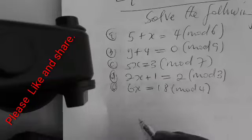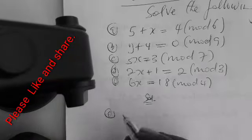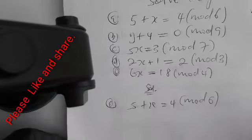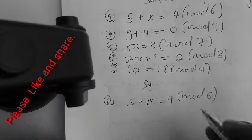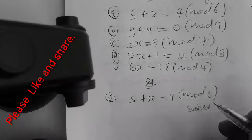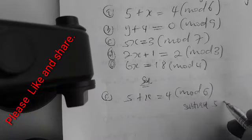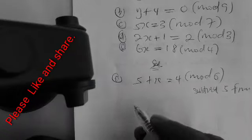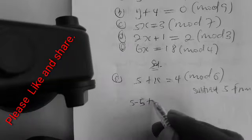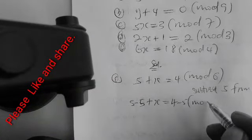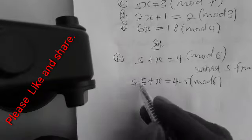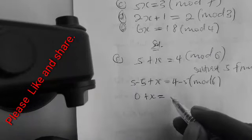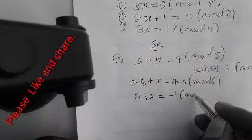So how do we solve this? To solve 5 plus x equals 4 mod 6, we want to remove the 5, so we subtract 5 from both sides. This gives us 5 minus 5 plus x equals 4 minus 5 mod 6, which simplifies to x equals minus 1 mod 6.